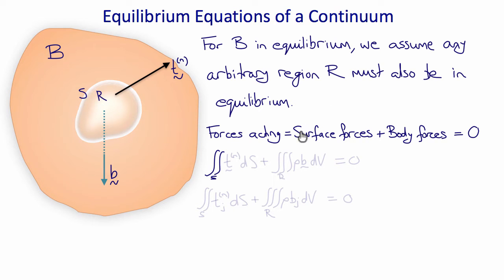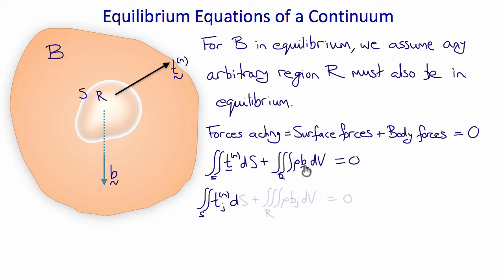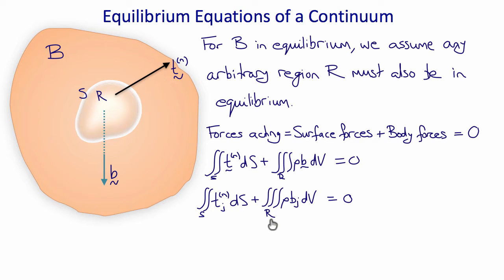The surface forces acting on the region are the double integral over the surface of the surface tractions T^N with respect to S, plus the triple integral over the volume of rho times B. B is body force per unit mass, so rho times B is body force per unit volume. Writing this in index notation, we obtain the double integral over S of T_j with respect to S, plus the triple integral over the volume R of rho times B_j with respect to volume, equal to zero.